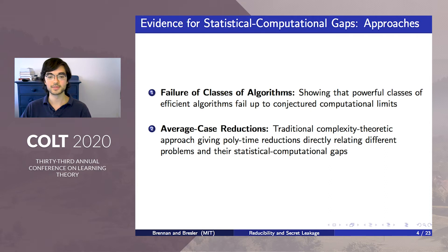Since statistical problems are average case problems, natural complexity theoretic barriers make it unlikely that most statistical computational gaps would follow from something like NP hardness. As a result, the goal in the reductions approach is typically to reduce between different average case problems with conjectured gaps.